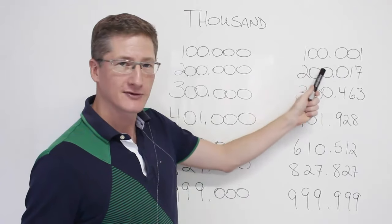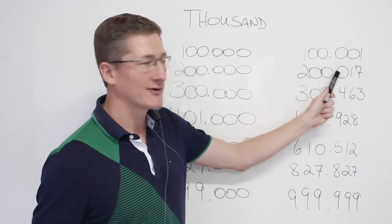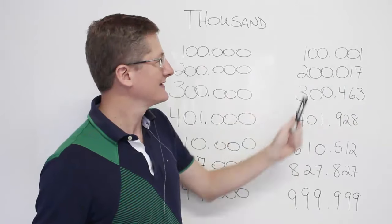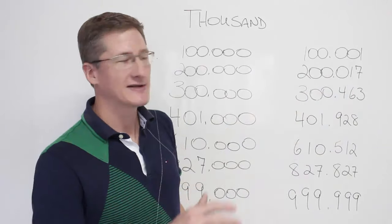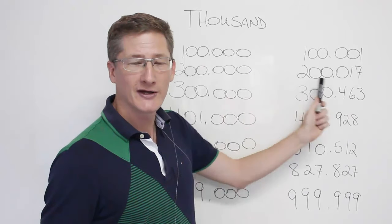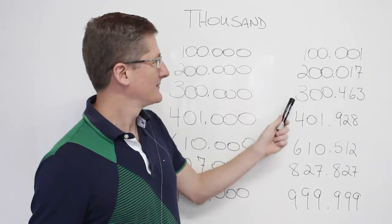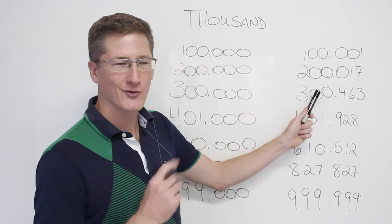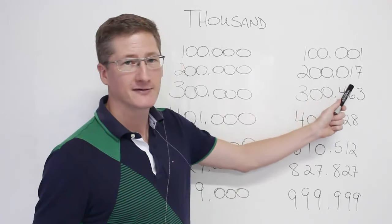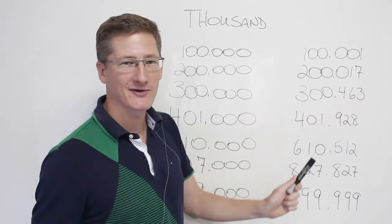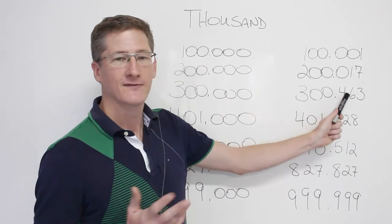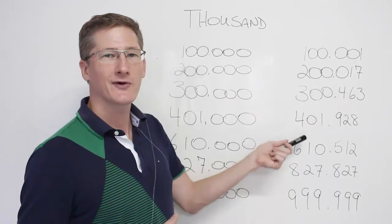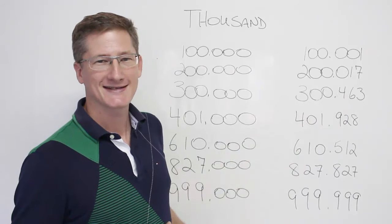Here we have 200, good. Here we have 17. So we say 200,017. Piece of cake. 200,017. Here we have the number 300. Here we have the number 463. We have the 300,463. 300,463.